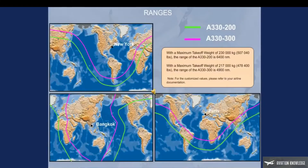With a maximum takeoff weight of 230,000 kilograms (507,040 pounds), the range of the A330-200 is 6,400 nautical miles. With a maximum takeoff weight of 217,000 kilograms (478,400 pounds), the range of the A330-300 is 4,900 nautical miles. For customized values, please refer to your airline documentation.